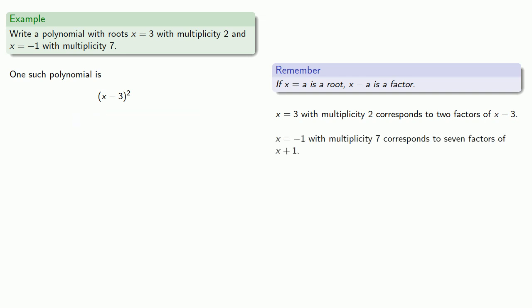x equals negative 1 with multiplicity 7 corresponds to seven factors of x plus 1. So we include the factor x plus 1 to the seventh power.